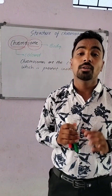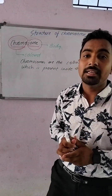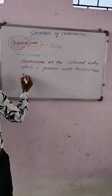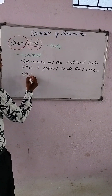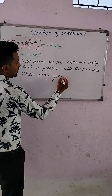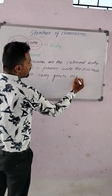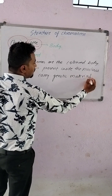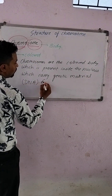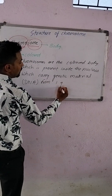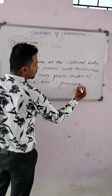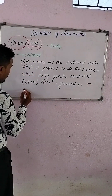Chromosomes are colored bodies present inside the nucleus which carry genetic material — that is DNA — from one generation to the next generation.